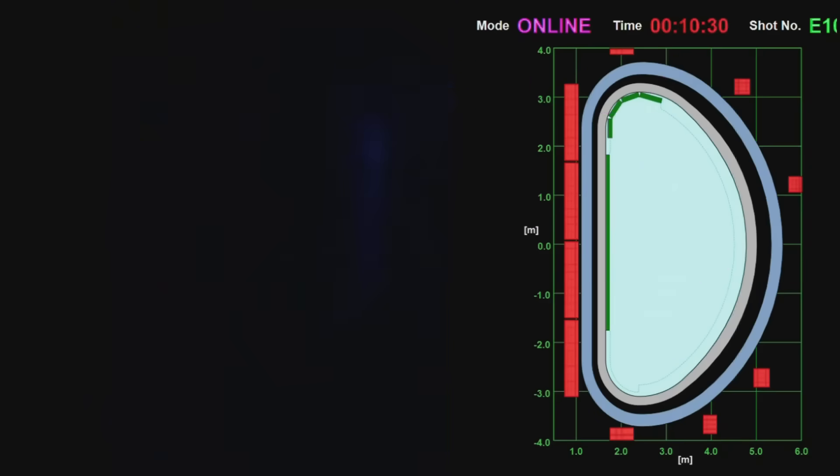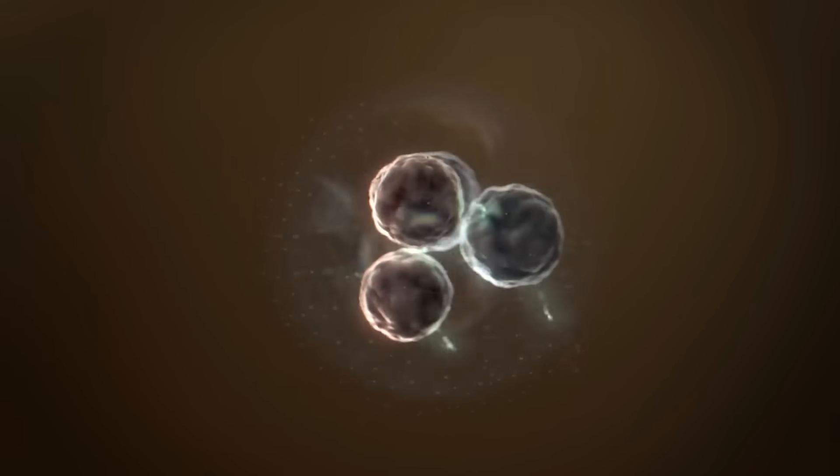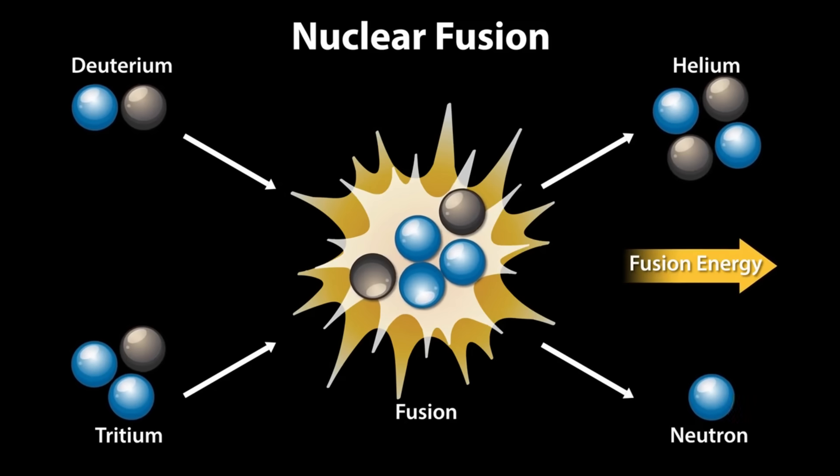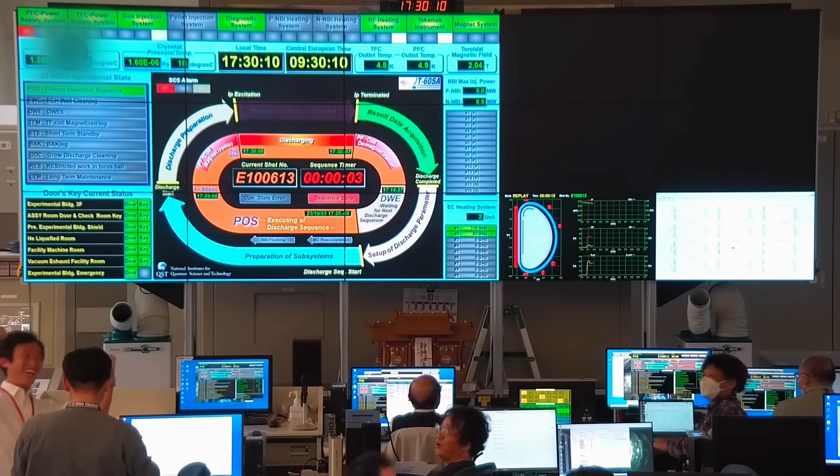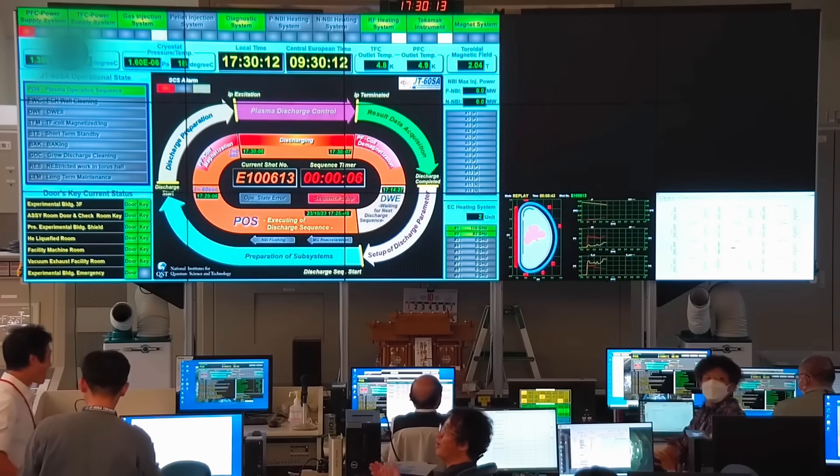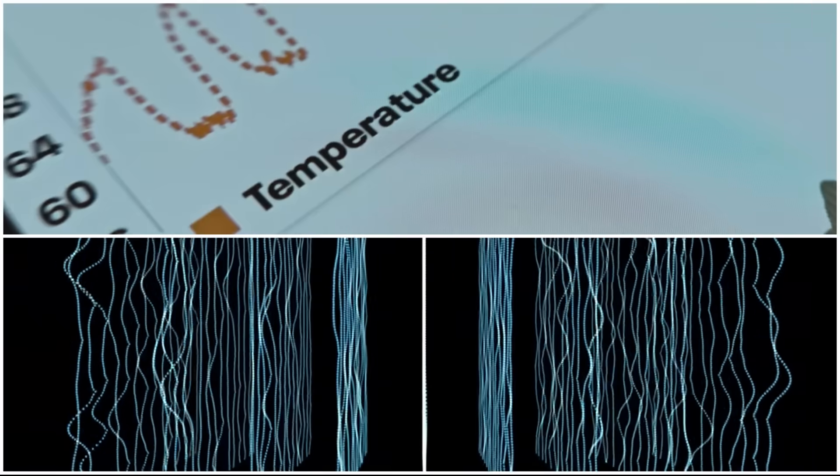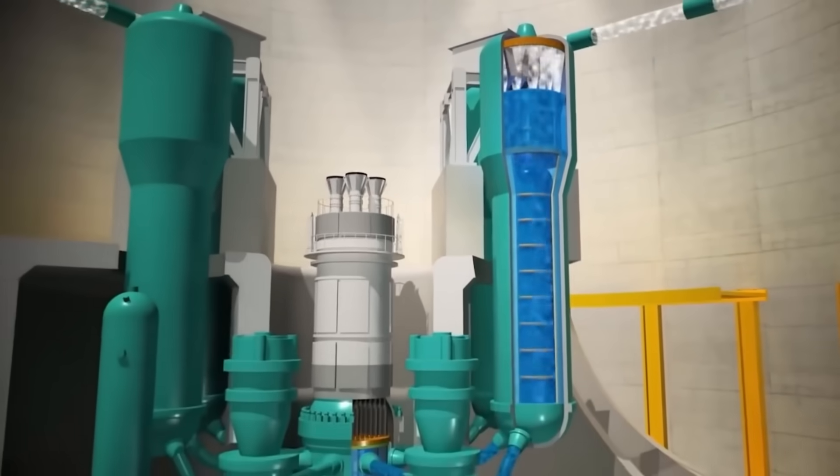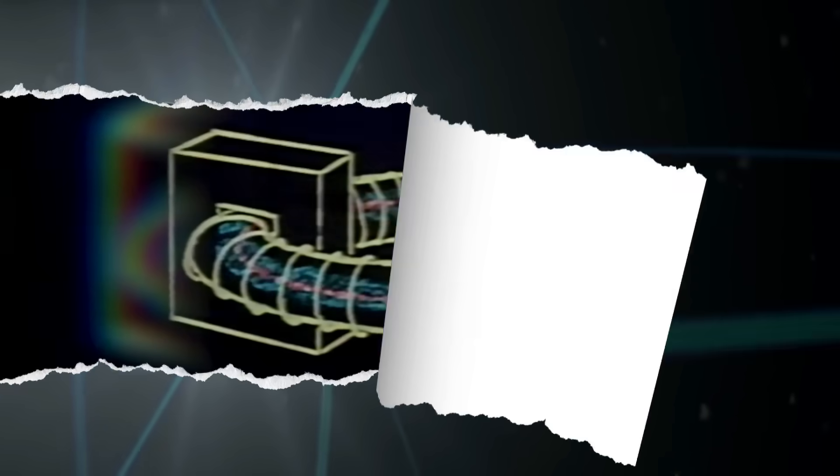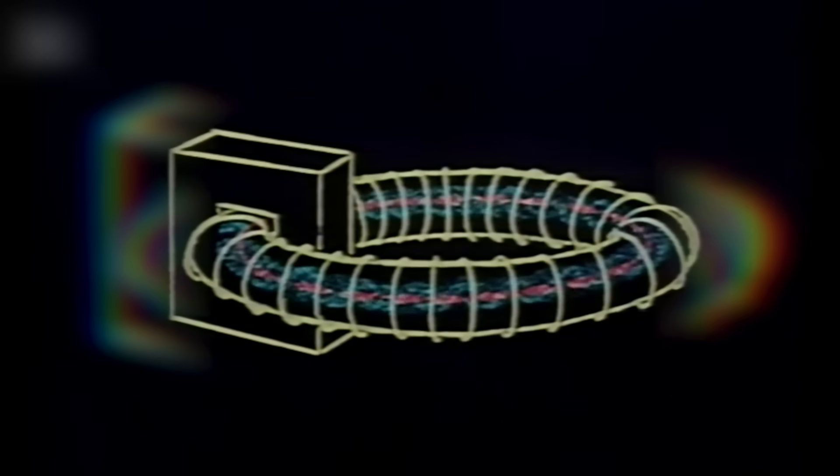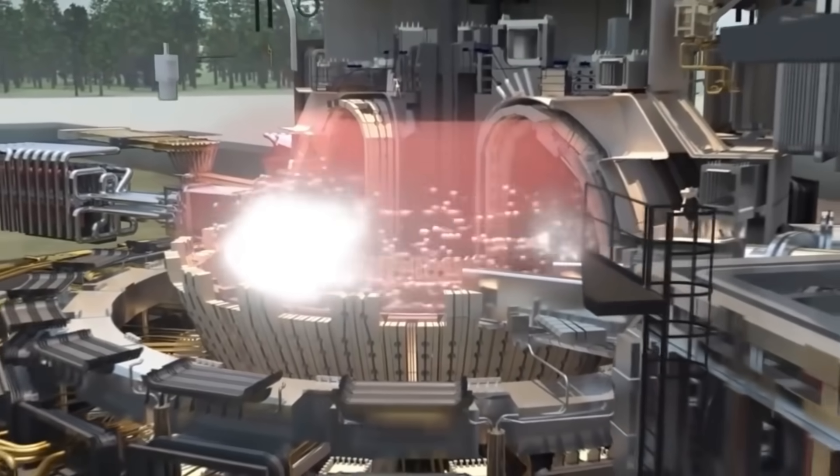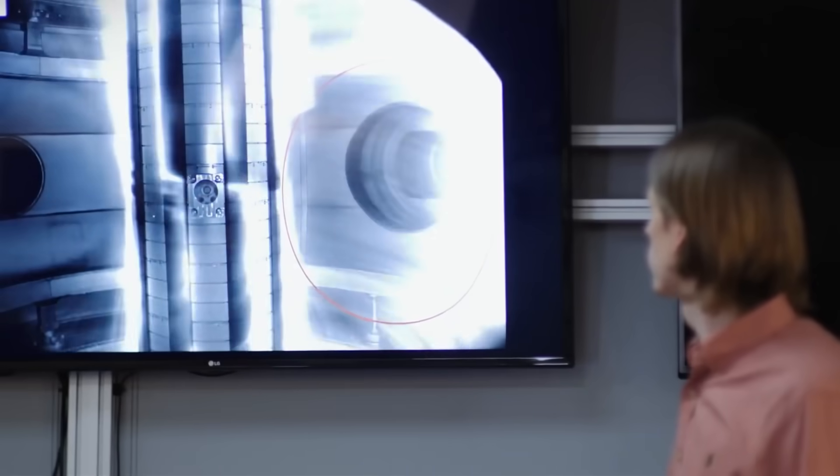Meanwhile, the Joint European Torus, JET, in the UK recently concluded its 40-year run with a spectacular finale. In its final experiment, JET generated 69 megajoules of fusion energy in just five seconds, smashing its previous record set back in 1997. Germany's Wendelstein 7X Stellarator has achieved plasma performance comparable to the best tokamaks with superior stability. In June 2023, W7X announced a significant breakthrough in plasma parameters.